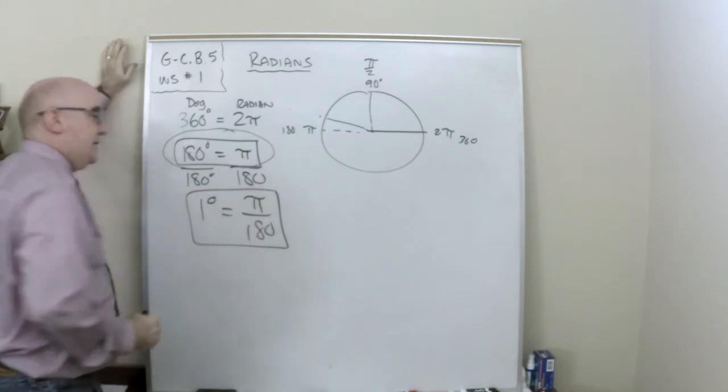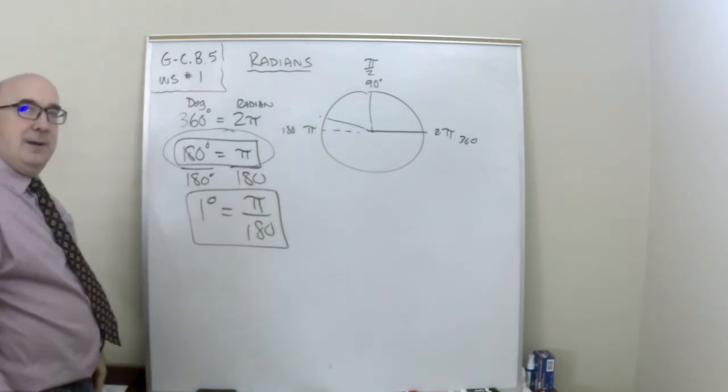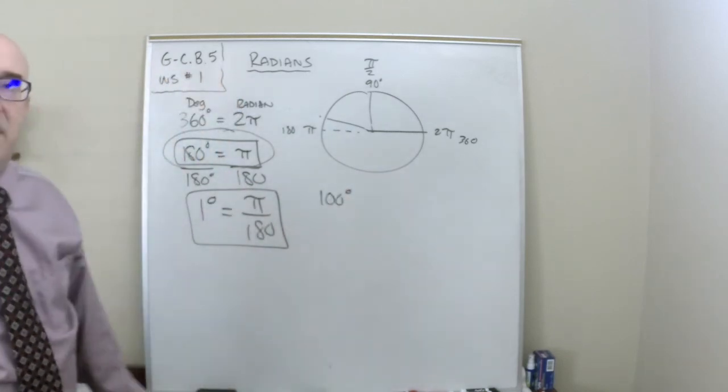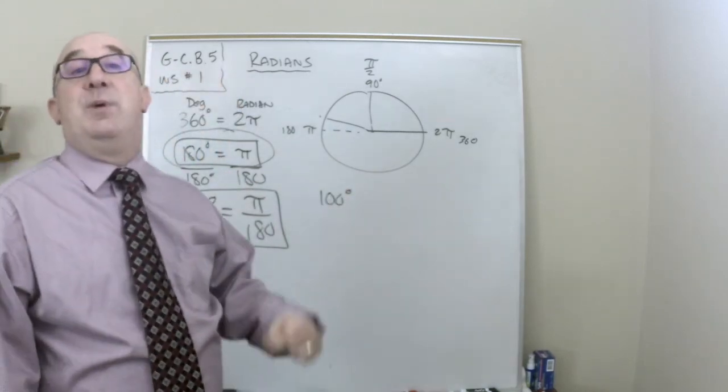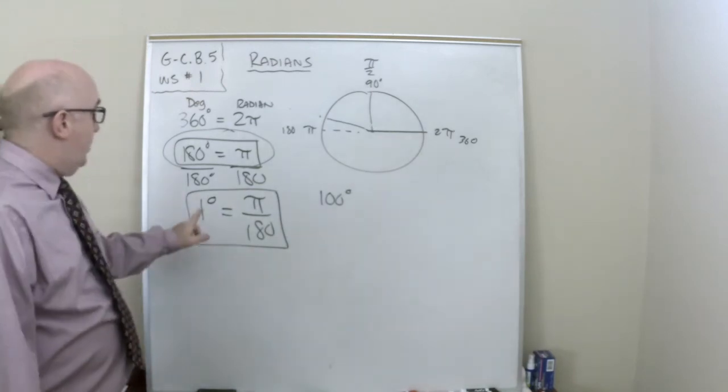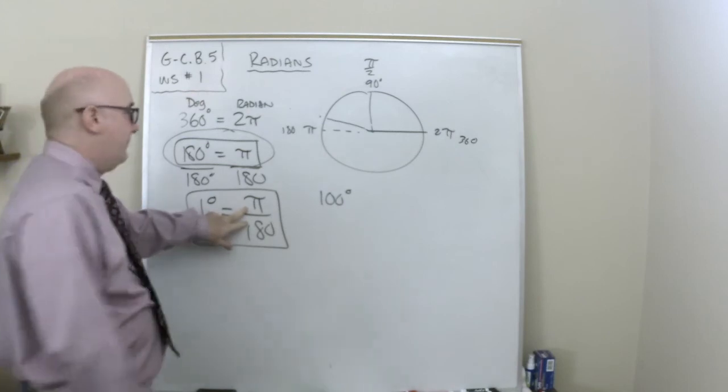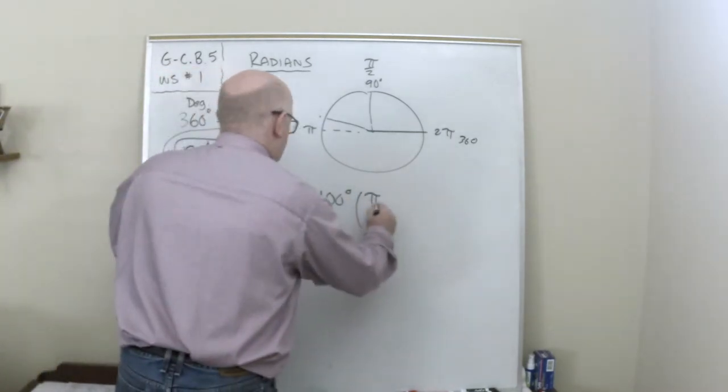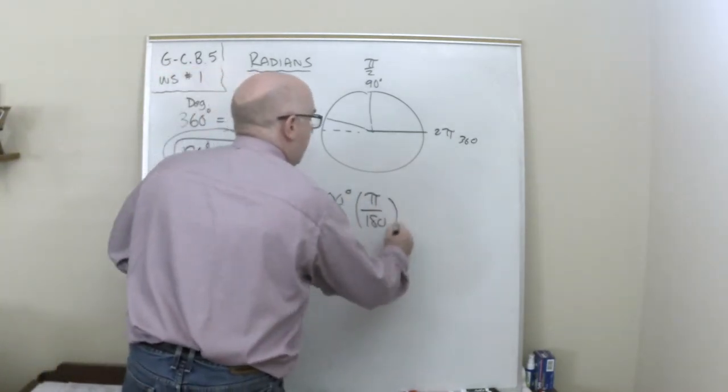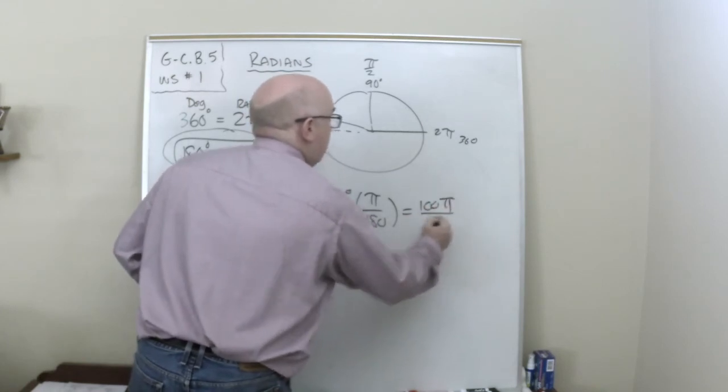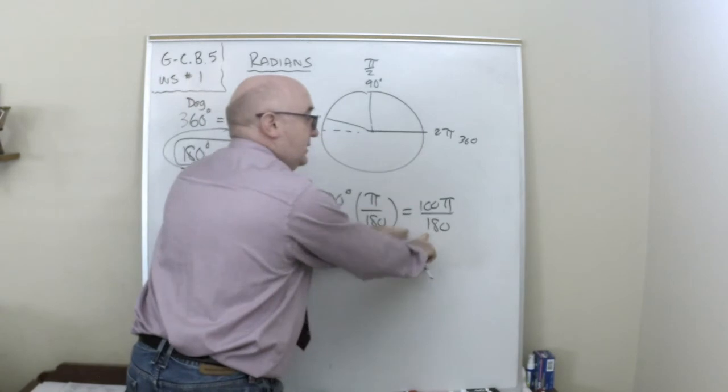Now, what this does for me, let's say I have a goofy number like 100. Let's say I have 100, 100 degrees and I want to know what it is in radians. What it's telling me for every degree I get, that's how many radians I get. So if I multiply this by pi over 180, I will convert this to, this is in degrees, this is in radians.